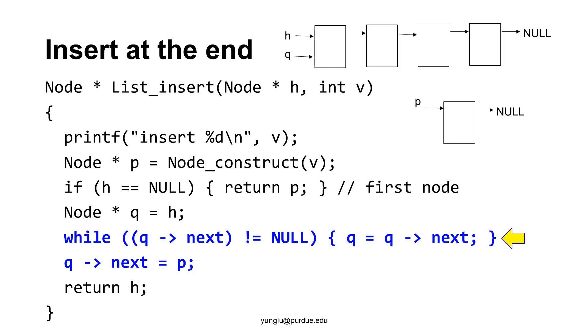We use another pointer called queue and it is initialized to point to the first node of the linked list. It is accomplished by this while block. This while block moves queue to the last node. As long as queue's next is not null, queue moves to the next node.